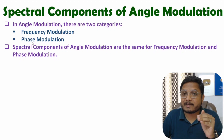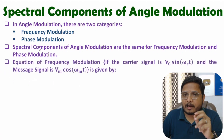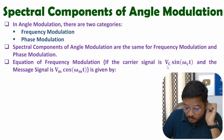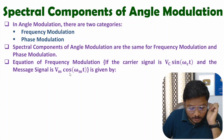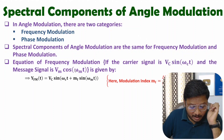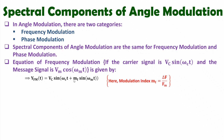Since frequency and phase modulation have identical spectral components, here I will consider the equation of frequency modulation. If the carrier signal is Vc sin(ωct) and message signal is Vm cos(ωmt), then in frequency modulation the equation is Vc sin(ωct + Mf sin(ωmt)). Here Mf is the modulation index, defined as delta-f divided by fm, where delta-f is frequency deviation and fm is the frequency of the message signal. This equation was already derived in earlier theory videos.